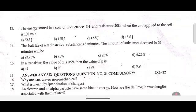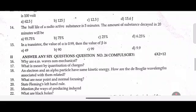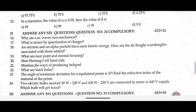Thirteenth one: The energy stored in a coil of inductance 5 H and resistance 20 ohm when an EMF is applied to the coil is dash. Fourteenth one: The half-life of a radioactive substance is 5 minutes. The amount of substance decayed in 20 minutes will be dash. Fifteenth one: In a transistor, the value of alpha is 0.99, then the value of beta is dash.